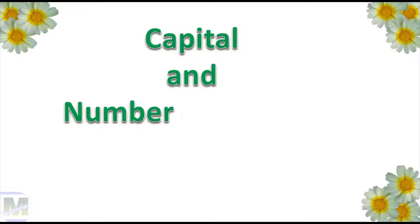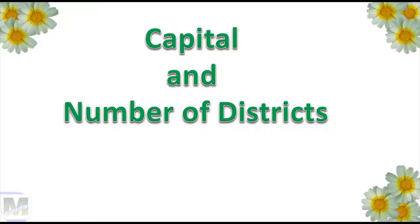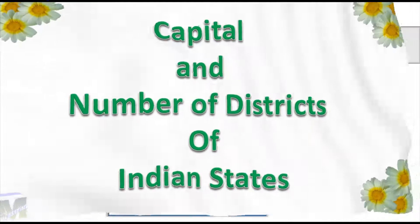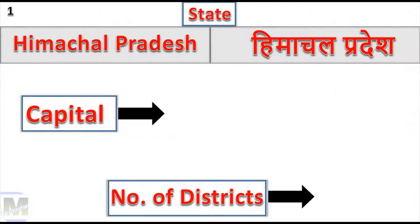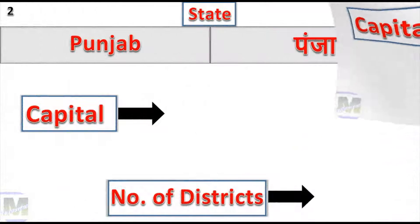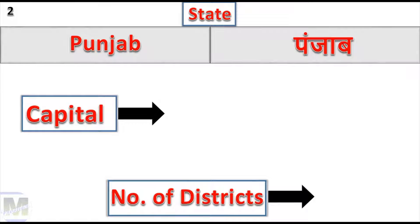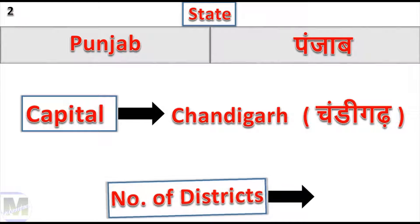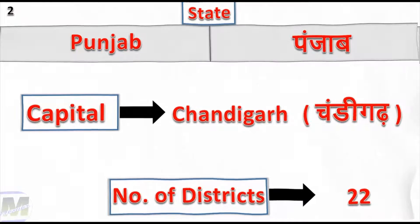Capital and Number of Districts of Indian States. Himachal Pradesh: Capital Shimla. Punjab: Capital Chandigarh, Number of Districts: 22.